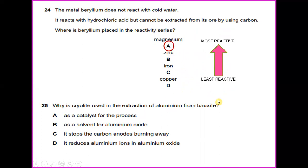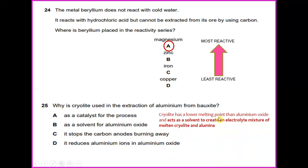Why is cryolite used in the extraction of aluminum from bauxite? Cryolite has a lower melting point than aluminum oxide and acts as a solvent to create an electrolyte mixture of molten cryolite and aluminum. So the answer for this will be B. Cryolite is a solvent for aluminum oxide.